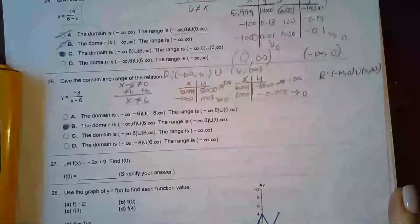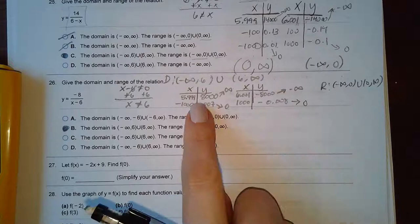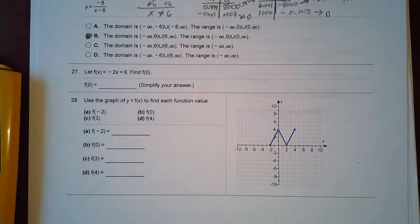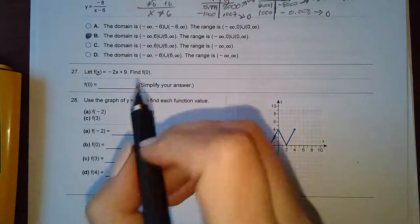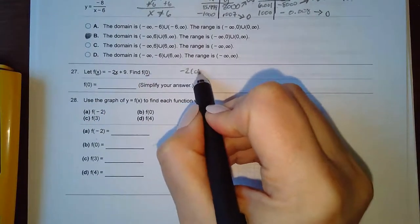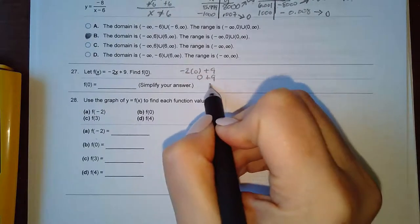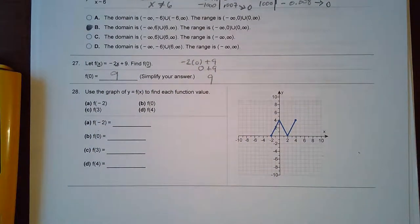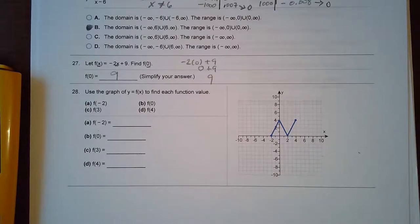Number 27 says find f of zero. We had an x in the function, but now the input becomes zero. So negative two times zero is zero, and adding nine gives nine. You need to show some work — show that you're plugging in zero and show the computation. For number 28, however, there's really nothing to show on paper.